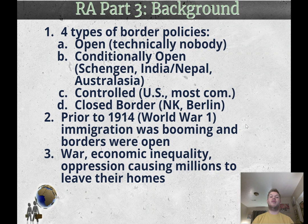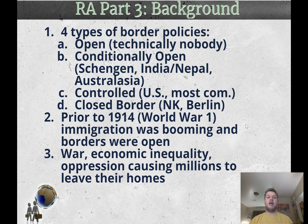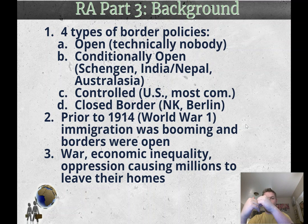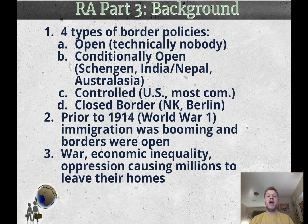Now let's talk about the background. There are four different types of border policies. Open borders would have absolutely no restrictions — technically nobody has one of these. Conditionally open borders, like the Schengen Agreement in Europe, allow free movement between member countries internally, similar to how you don't face enforced borders between states. But if you want to enter the group from outside, there are still many restrictions. So it's open inside the block, but the outer border still has significant patrol.